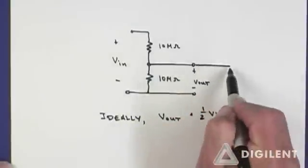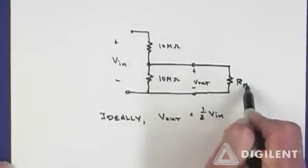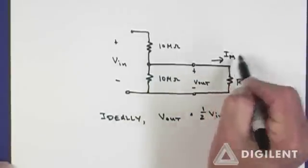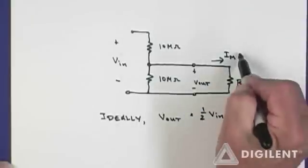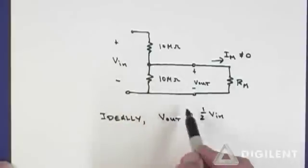In reality, however, when I connect up a meter to this, I have some meter resistance R sub m. That means that the current through the meter, I sub m, is not necessarily exactly zero. Drawing some current from this changes Vout.